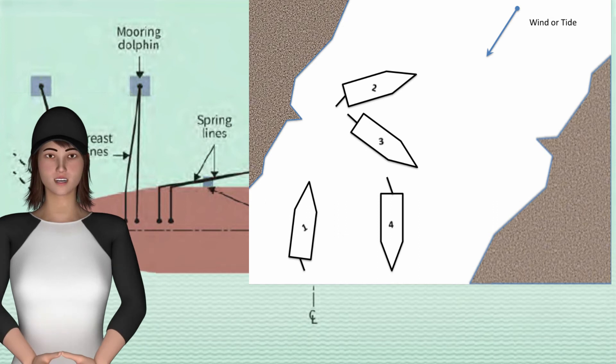Vessel moves to the left hand side of the channel where the rate of the current will be less. Starboard helm is applied, canting the bow into the faster flowing center channel. Vessel engages stern propulsion to keep bow in the faster flowing water.